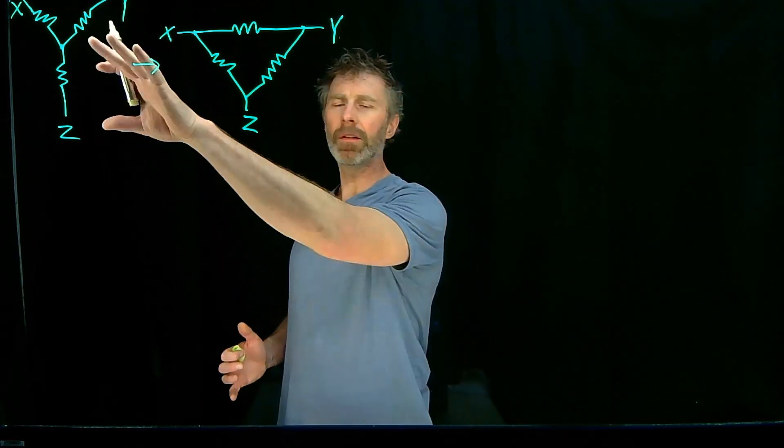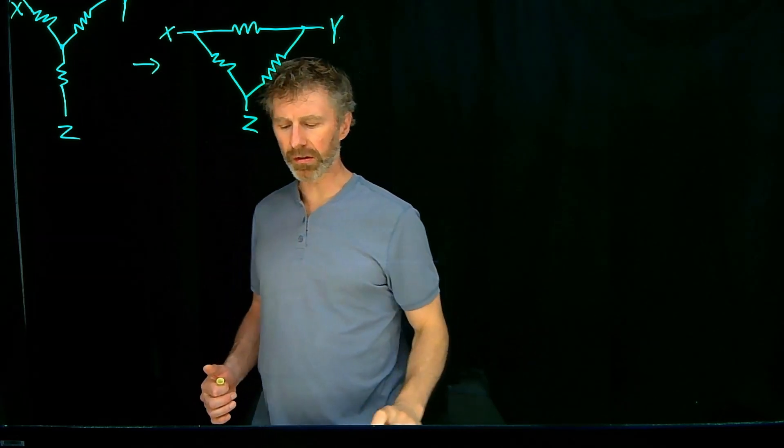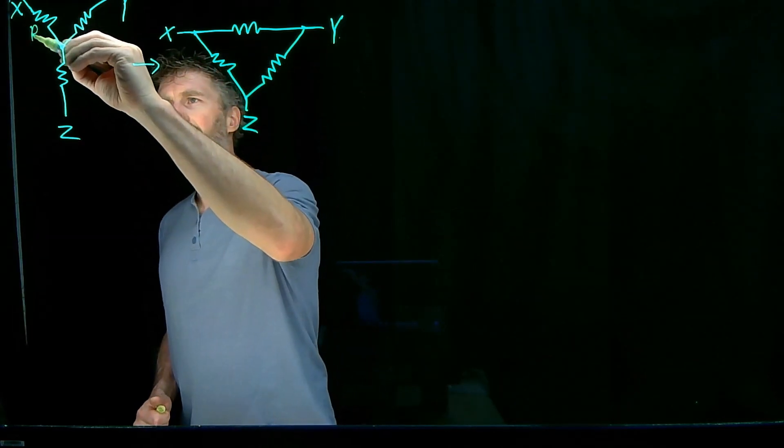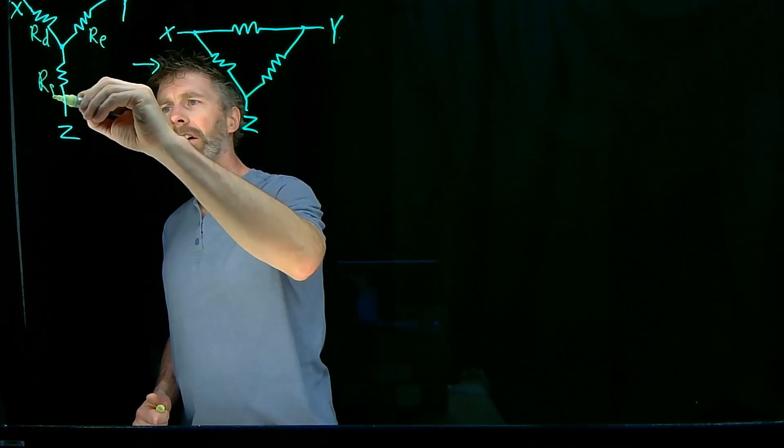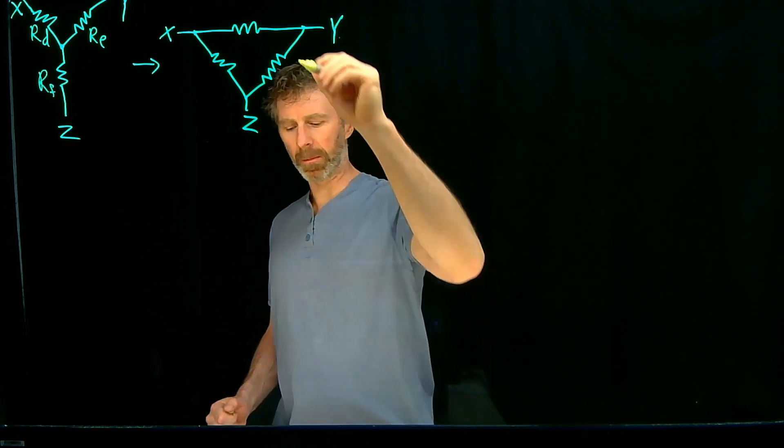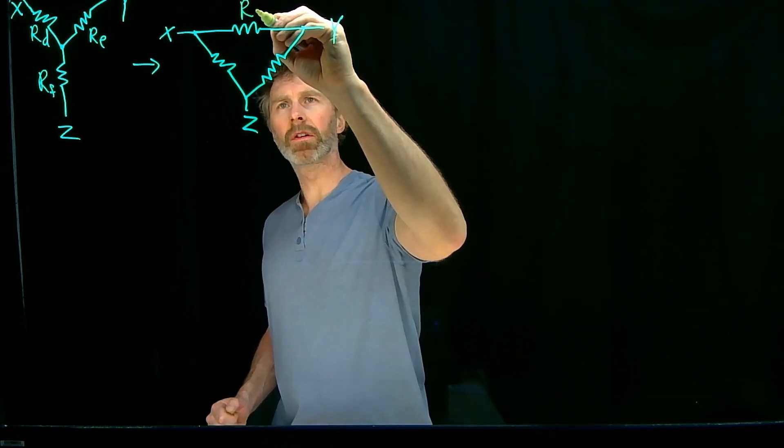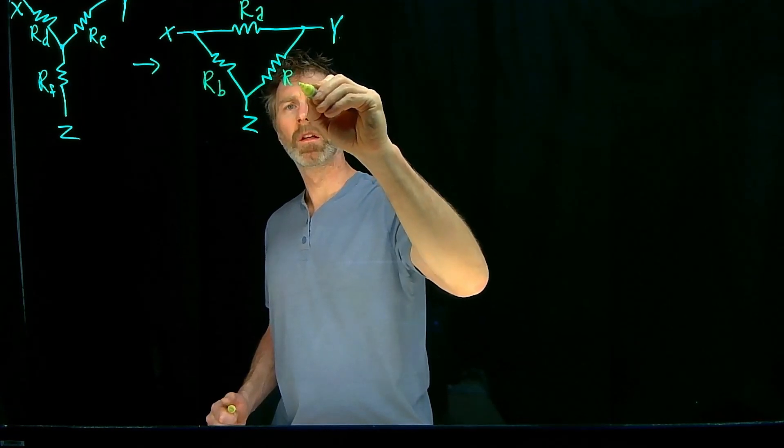And what we're assuming is that we have this configuration, the Y configuration, and we know the values of these resistors. Let's just label them RD, RE, and RF. And we need to figure out the values of these resistors that give us the equivalent circuit. And these resistors, we're going to call them RA, RB, and RC.